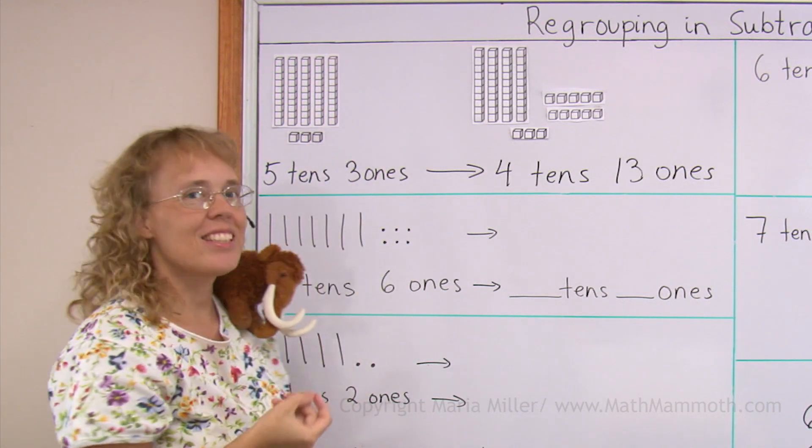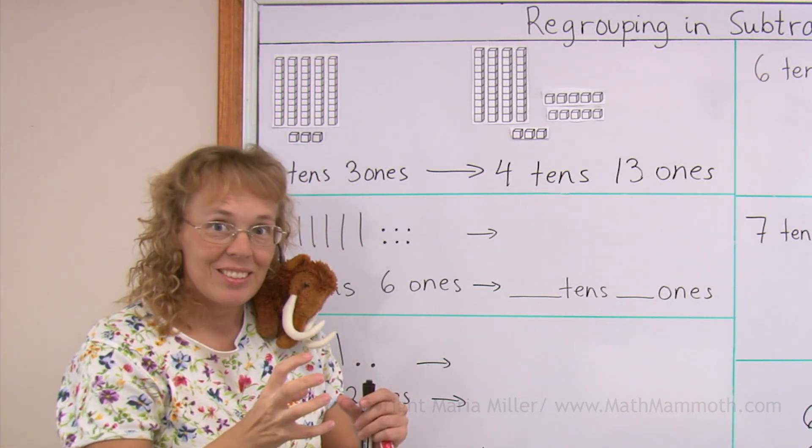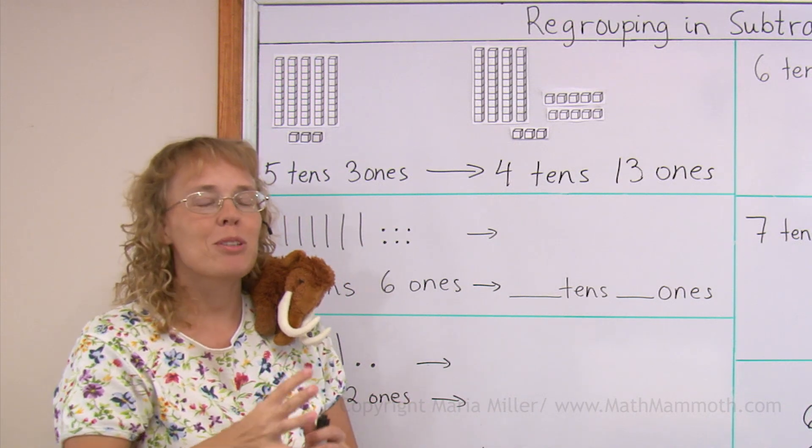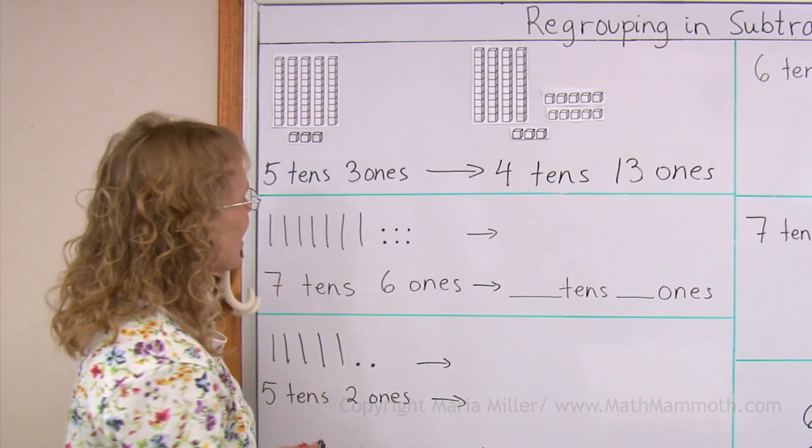So that is the process of regrouping. This ten, one ten gets regrouped with the ones. It's not anymore with the other tens, it becomes part of ones. Let's do it again.